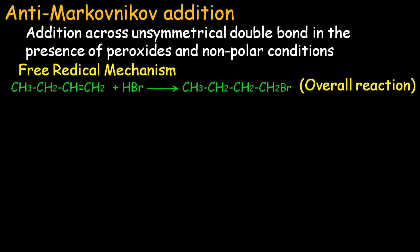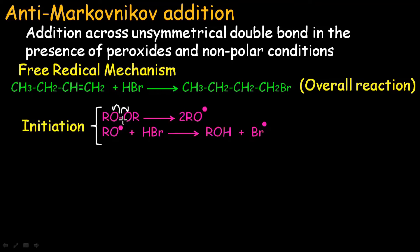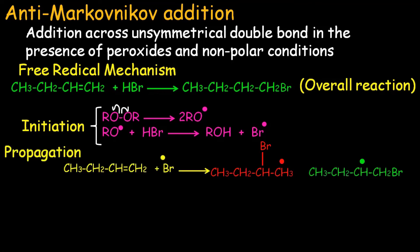The free radical mechanism starts with initiation: the peroxides undergo homolytic cleavage, meaning the bond between two atoms breaks equally, shown with single-headed arrows. This generates a radical species which attacks on HBr, generating an alcohol along with bromine free radicals. These bromine free radicals then attack the olefinic bond, again causing homolytic cleavage of the double bond. The bromine free radicals can add at the secondary carbon or the primary carbon, but in anti-Markovnikov addition, they always add at the less stable position.